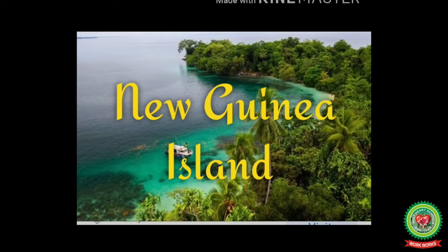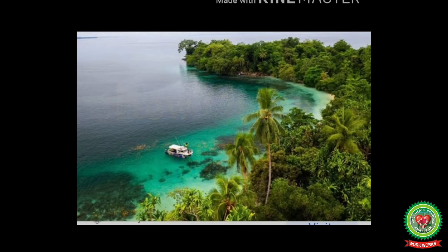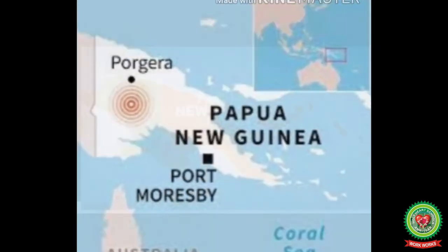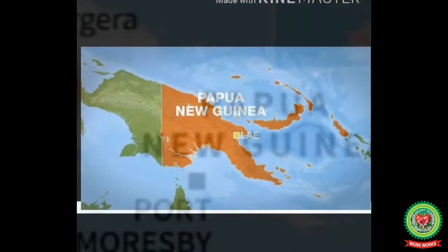The New Guinea Island is in the western South Pacific, off the north coast of Australia. It is the second largest island in the world after Greenland. It is divided into two parts: the western half consists of part of Irian Jaya, and the eastern half consists of part of Papua New Guinea.